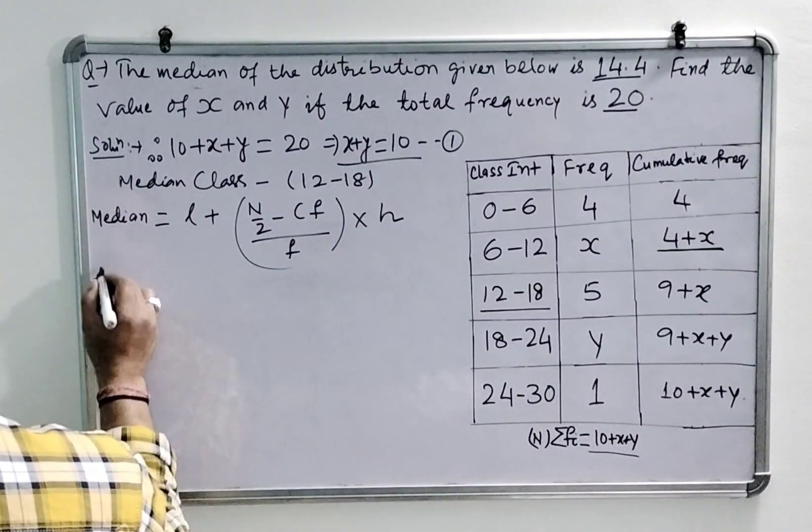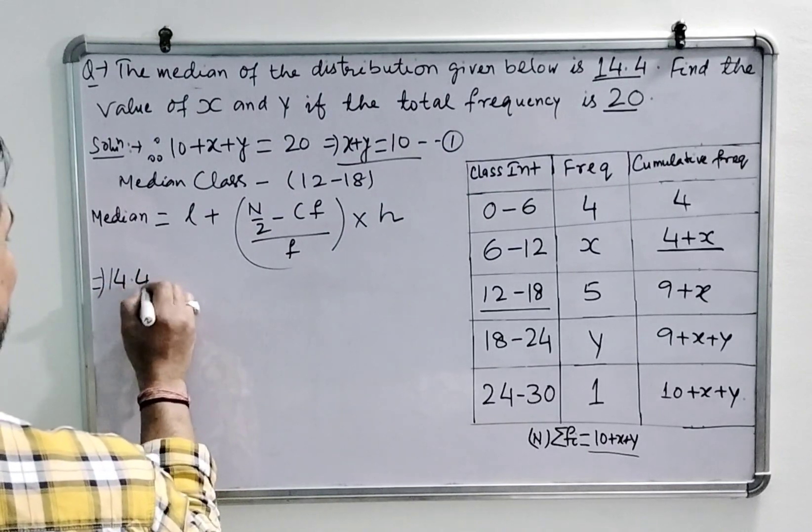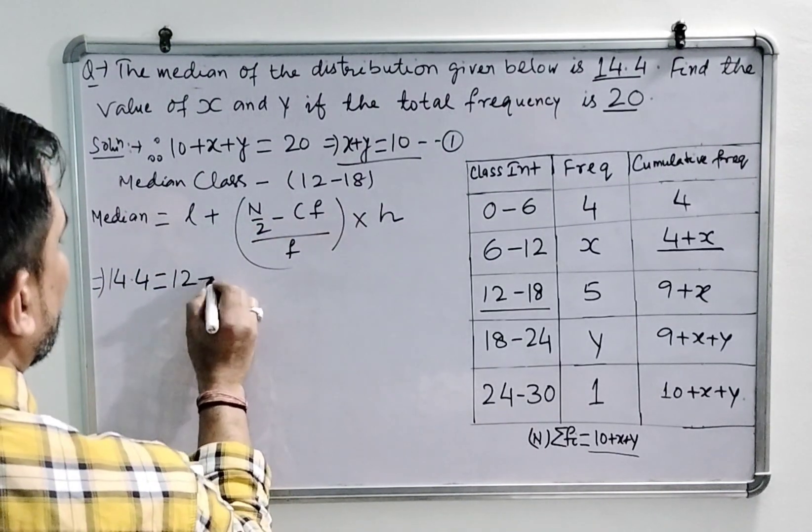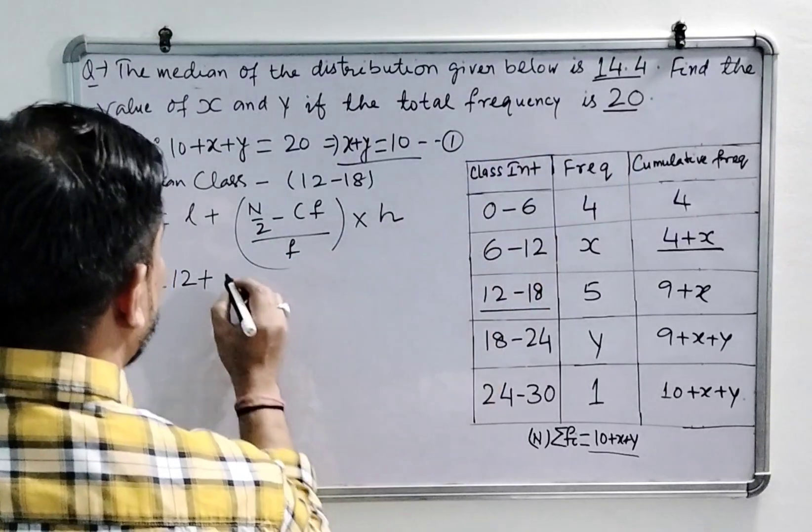We will start putting the values. In the question, the median value is 14.4 and the lower limit of median class is 12. N upon 2, total sum of frequency divided by 2, this is 10.